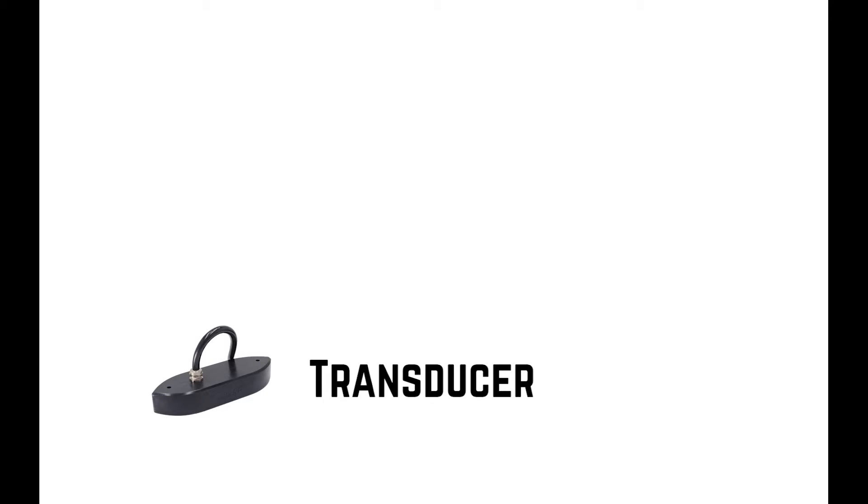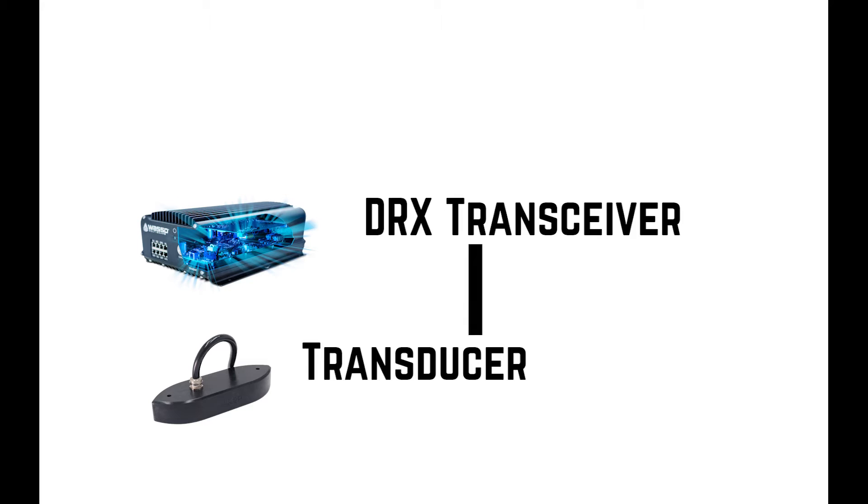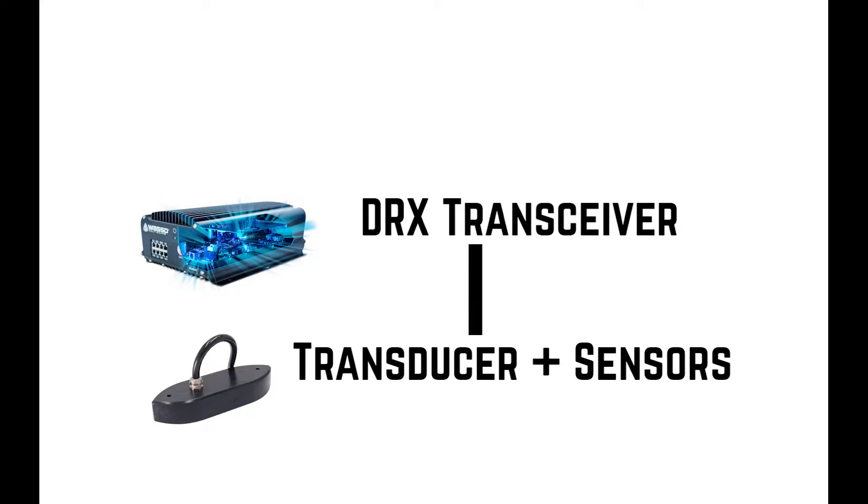The main components was the transducer for transmitting the 120 degree swath. We then do the beam forming, which means basically getting a resolution across that swath in the transceiver, which is the DRX. The transceiver does the processing of the actual signal from the transducer and also does the data fusion for all of the sensors. And the reason that you need to use the sensors is so that you can reference any position on the sea floor or in the water column.